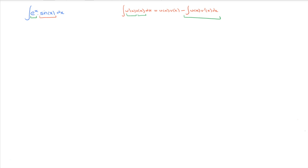Indeed, we could differentiate e^x a thousand times or integrate it a thousand times and we'd still be left with exponential of x. Similarly, with sine of x, no matter how many times we differentiate or integrate it, we're still going to be left with either a sine function or a cosine function.